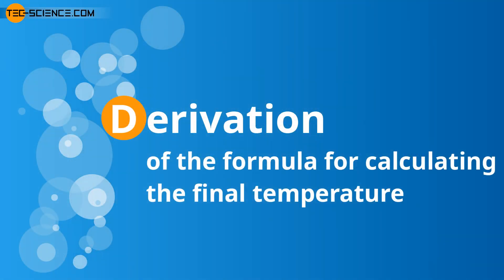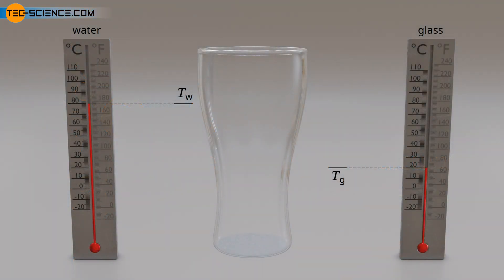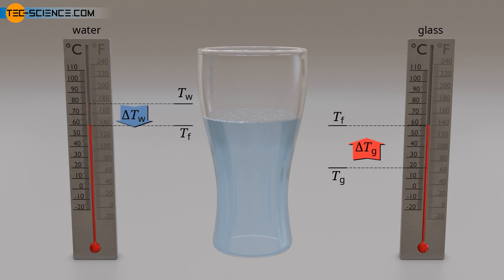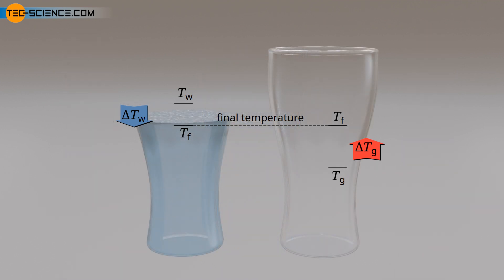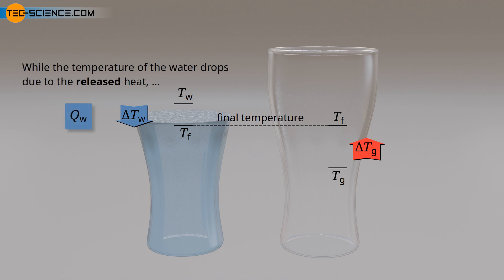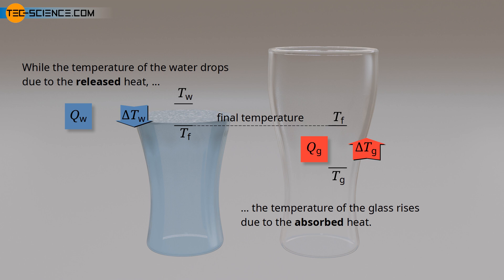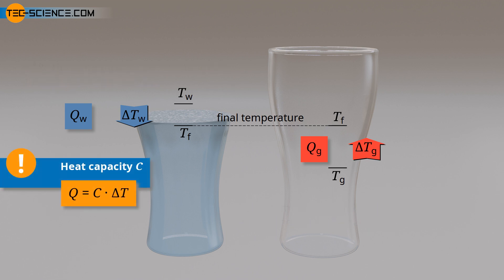Derivation of the formula for calculating the final temperature. We will consider the example of hot water and a colder glass. If the hot water is poured into the cool glass, then heat is transferred from the water to the glass, causing the glass to heat up due to absorbed heat. At the same time, the water cools due to the heat given off until a final temperature is reached. The general relationship between transferred heat and temperature change of a body is given by the heat capacity of the considered object. The heat capacity of a body describes how much heat energy is required to change the temperature of the body by 1 Kelvin or 1 degree Celsius.